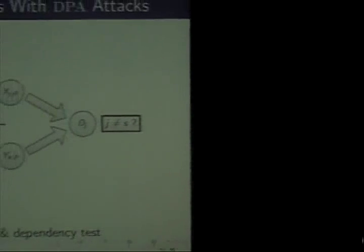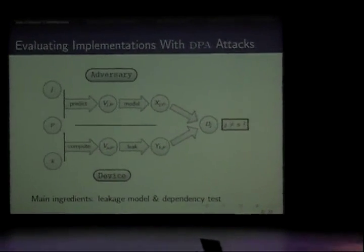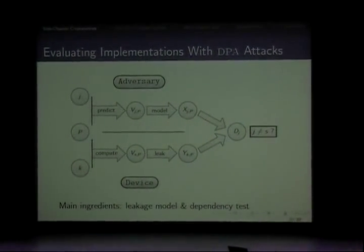This is some work we did on Generic Side-Channel Distinguishers, trying to improve over the existing mutual information analysis, and it led us to consider some of the limitations of such distinguishers in the context of standard DPA attacks used to evaluate the actual security of physical implementations.